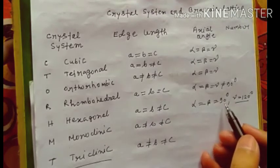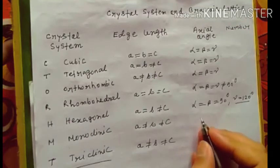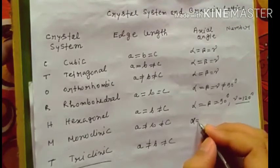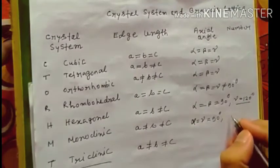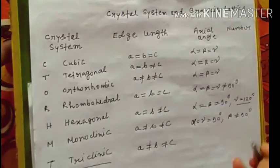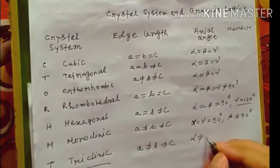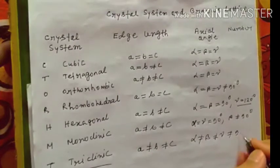In monoclinic, alpha equal to gamma equal to 90, but beta not equal to 90. And for triclinic, all are different: alpha not equal to beta not equal to gamma not equal to 90.